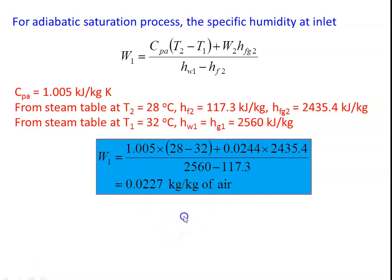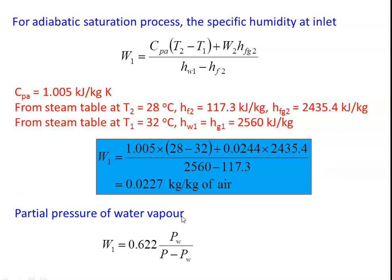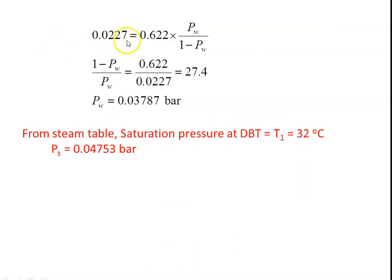Now we calculate the partial pressure of water vapor using: W1 = 0.622 × PW / (P − PW). The left-hand side is known: W1 = 0.0227, P = 1 bar. Substituting: 0.0227 = 0.622 × PW / (1 − PW). Rearranging: (1 − PW) / PW = 0.622 / 0.0227 = 27.4. Solving, the partial pressure of water vapor PW = 0.03787 bar.